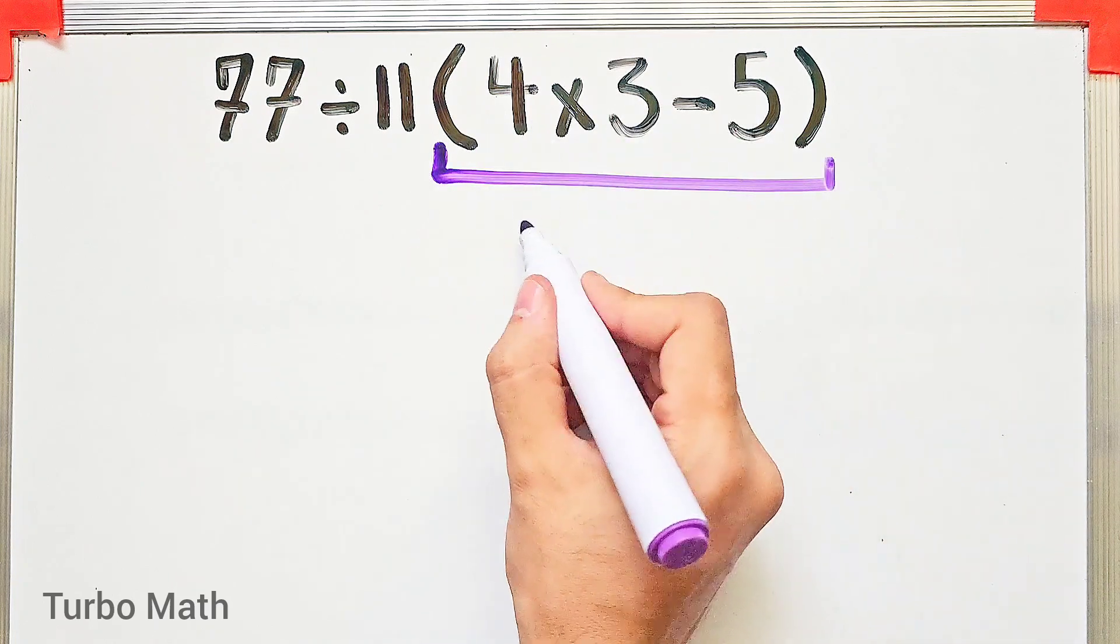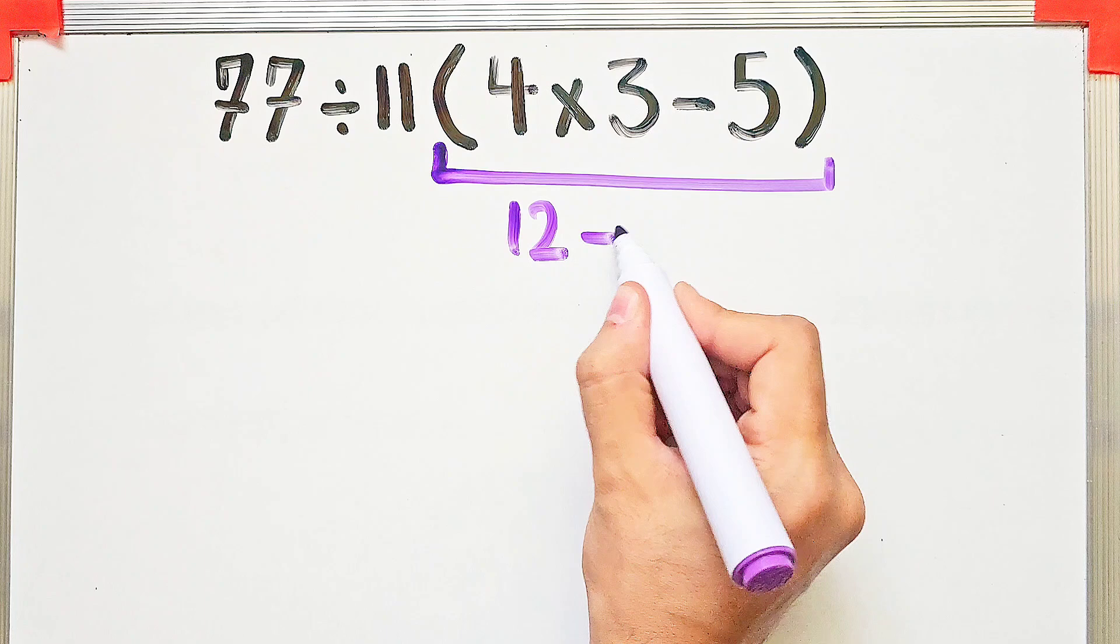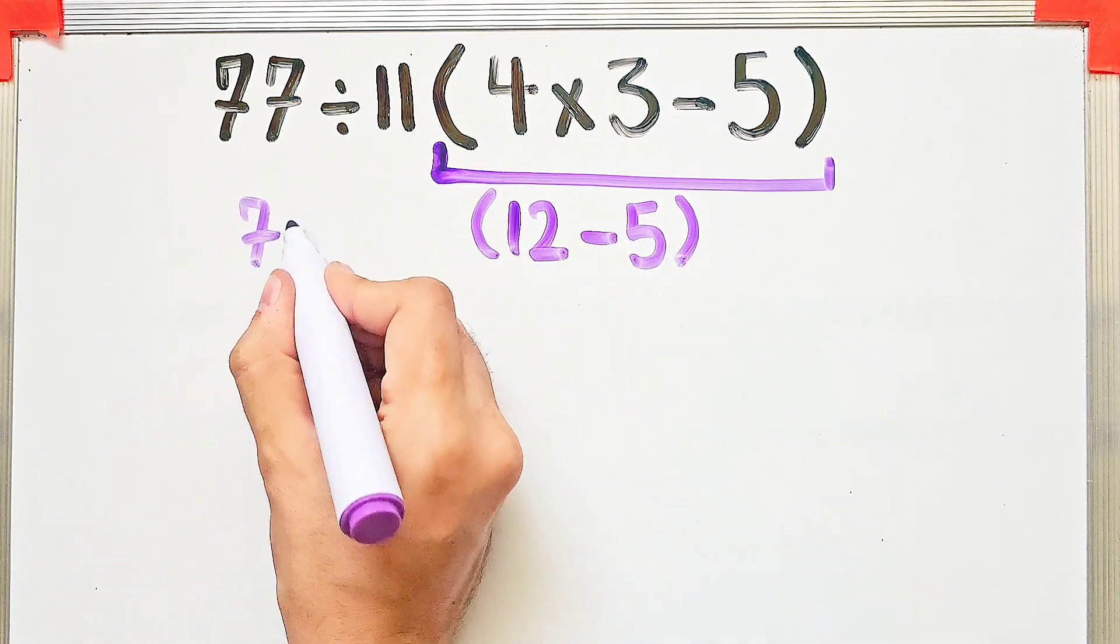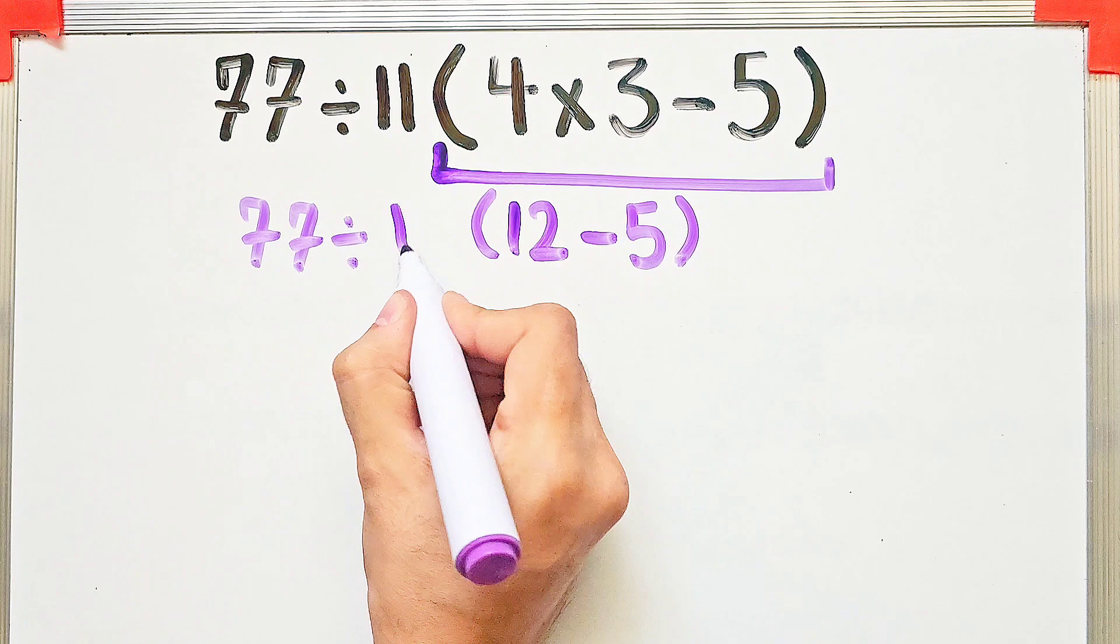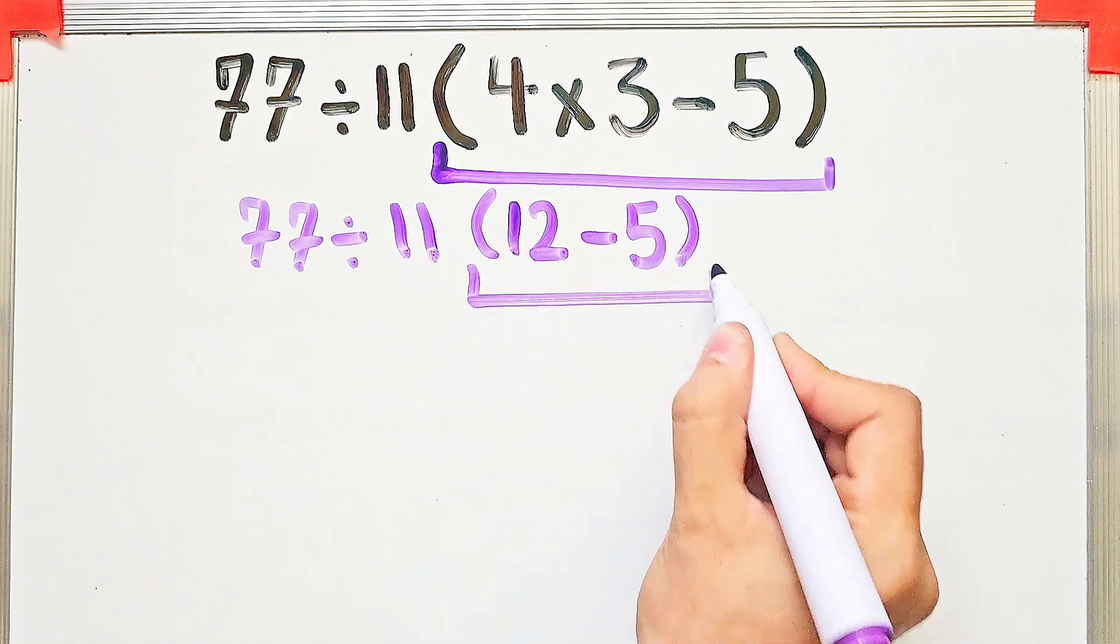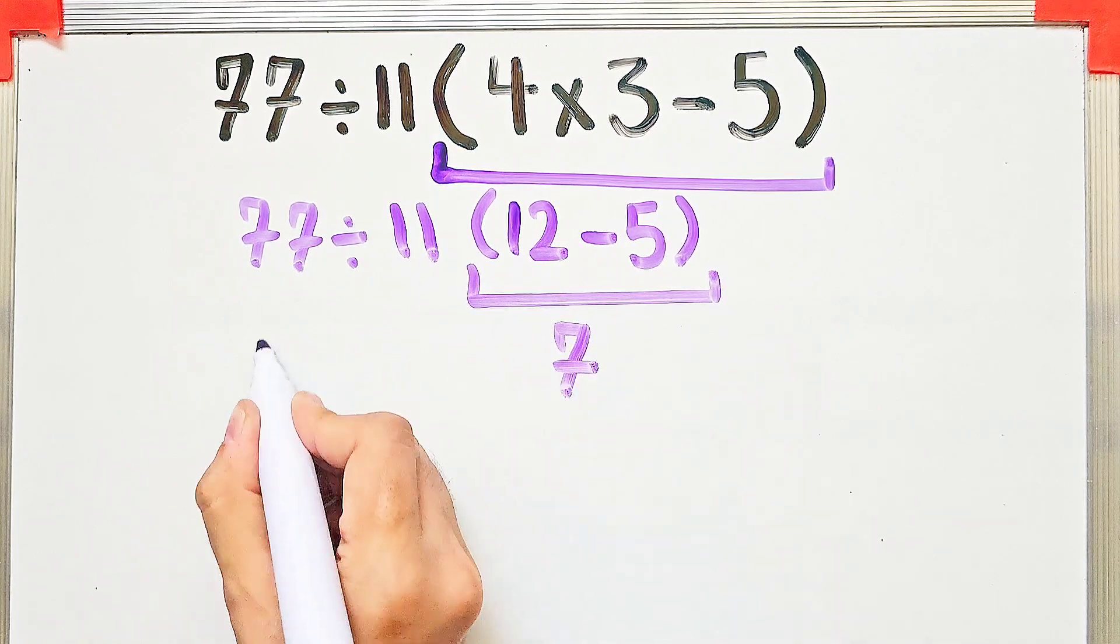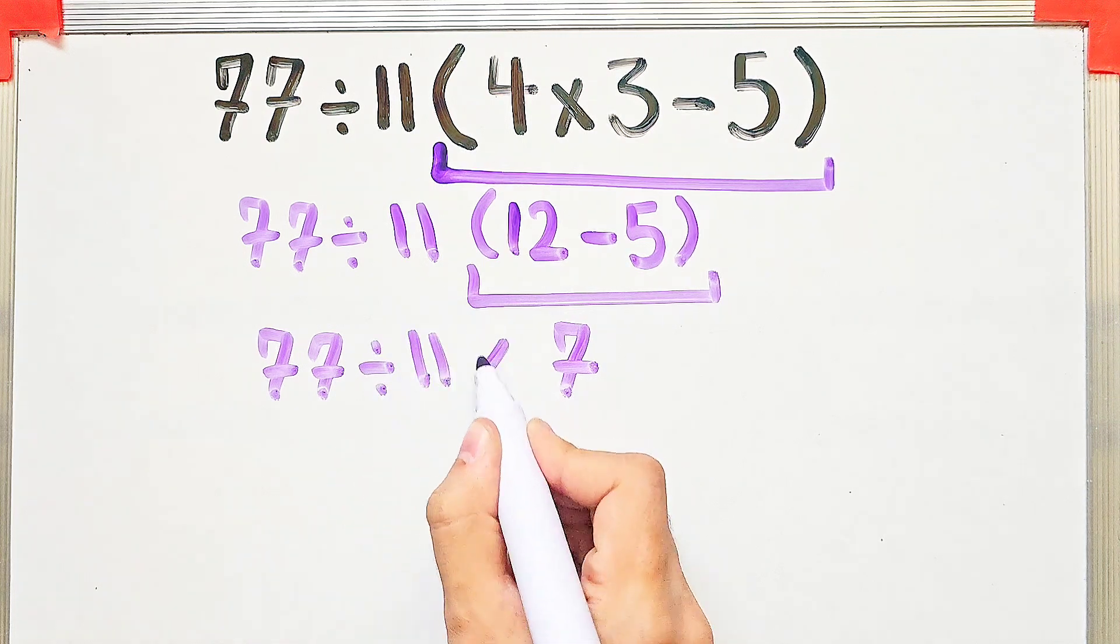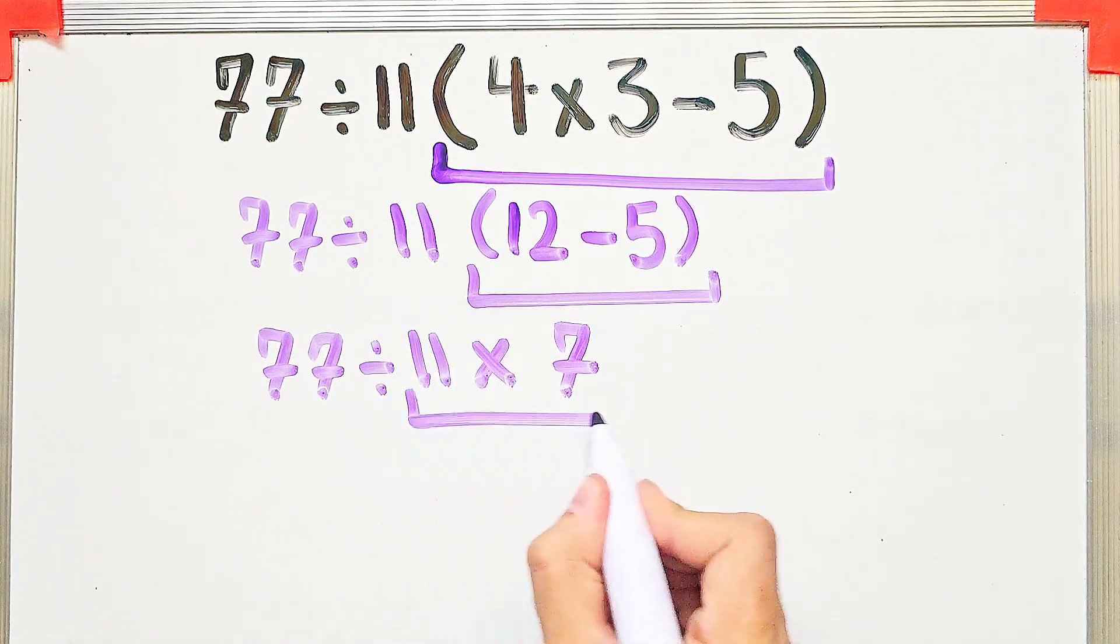We have 4 times 3 that equals 12, then minus 5. Now the question is 77 divided by 11 then times 12 minus 5. 12 minus 5 equals 7, so 77 divided by 11 then times 7.